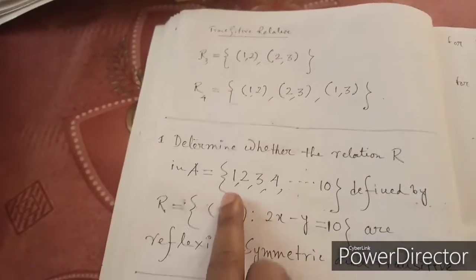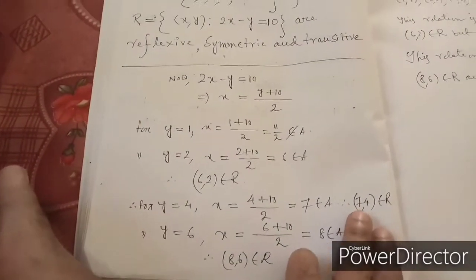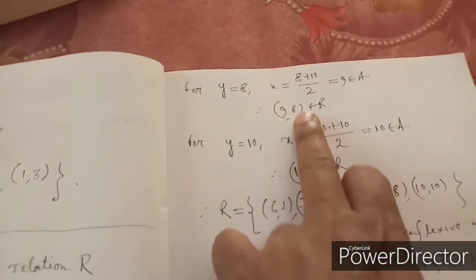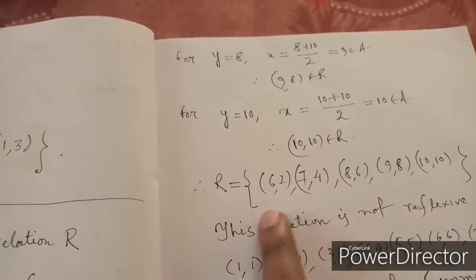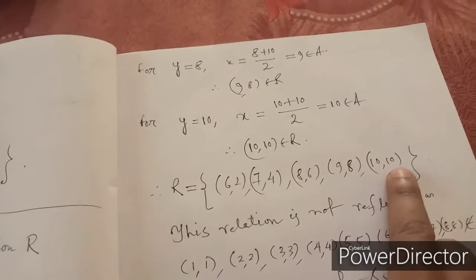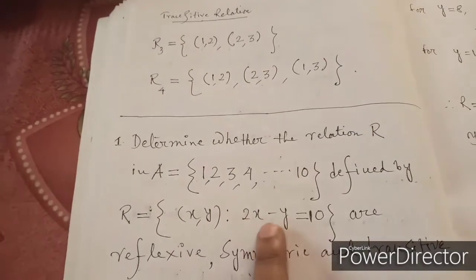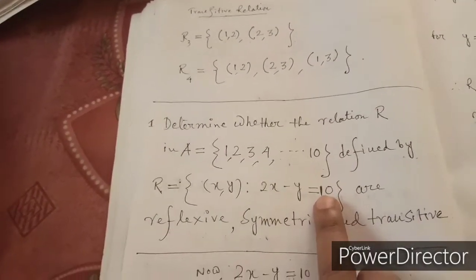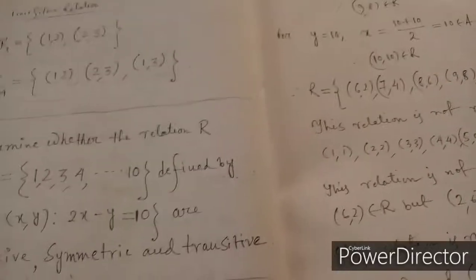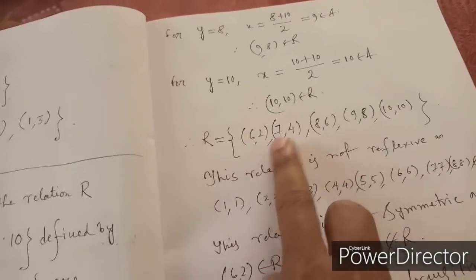Therefore, R in roster form is: R = {(6,2), (7,4), (8,6), (9,8), (10,10)}. This converts the set-builder form R = {(x,y) : 2x − y = 10} into roster form. Now we check whether this relation is reflexive, symmetric, or transitive.